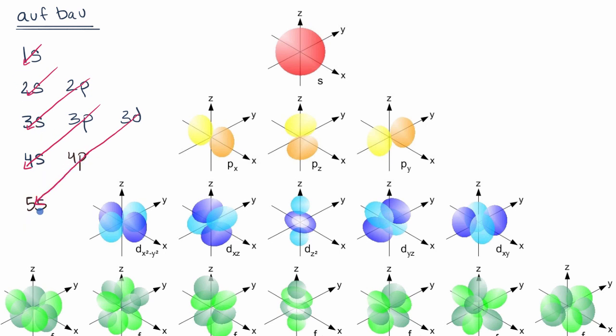But this starts to get us pretty far, because as we talked about, the s subshells can fit two electrons, but the p's fit six, and the d's fit ten.